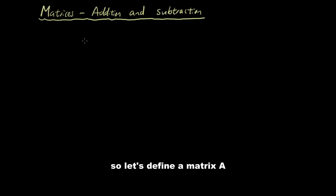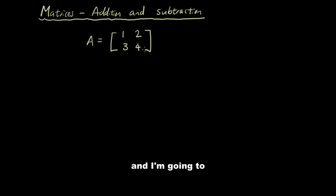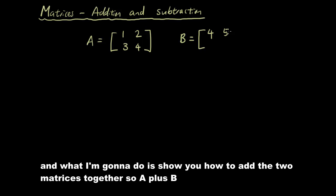So let's define a matrix A and I'm just going to put some numbers in here, it doesn't really matter what numbers I put in. And I'm going to make up another matrix called B. And what I'm going to do is show you how to add the two matrices together, so A plus B.